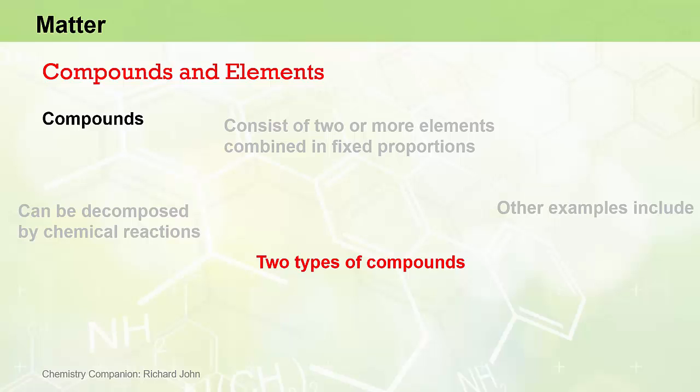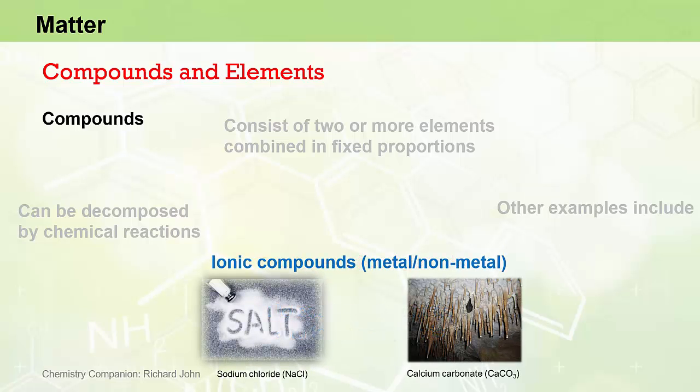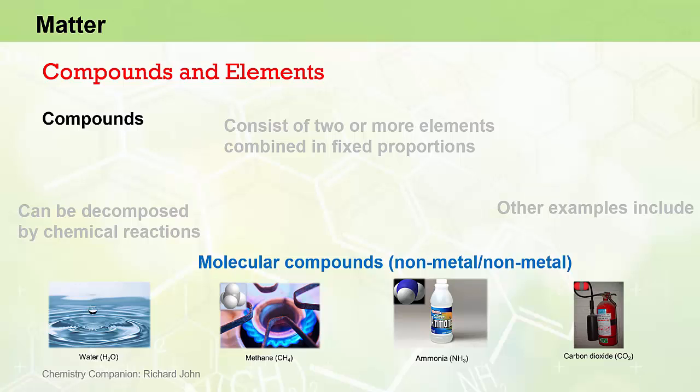For the purposes of our studies, there are two main types of compounds that we need to consider, molecular compounds and ionic compounds. Ionic compounds include sodium chloride and calcium carbonate, and contain metals bound with non-metals, or metals bound with groups of non-metals. And they are distinguished from molecular compounds which contain only non-metals bound to other non-metals, and include examples such as water, methane, ammonia, and carbon dioxide. We will deal with both molecular and ionic compounds in more detail in later videos.